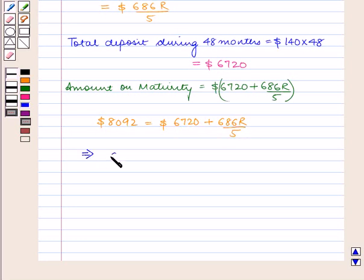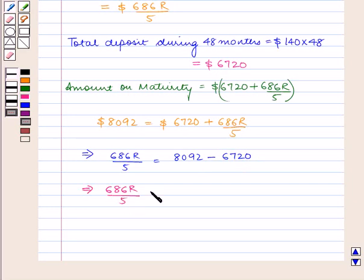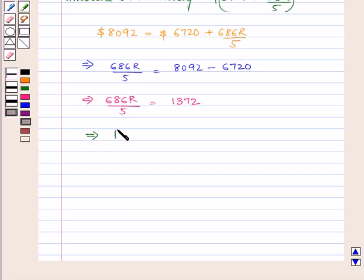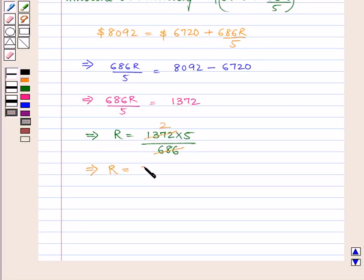This implies 686R by 5 is equal to 8092 minus 6720. This implies 686R by 5 is equal to 1372. That is R is equal to 1372 into 5 upon 686. Since 686 into 2 is 1372, R is equal to 2 into 5, which is equal to 10% per annum.